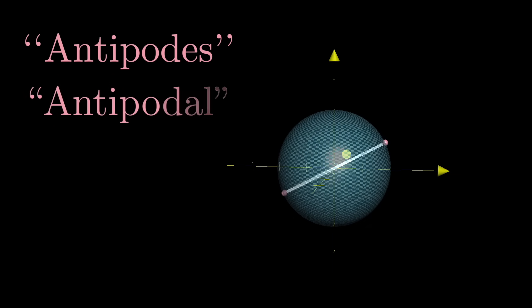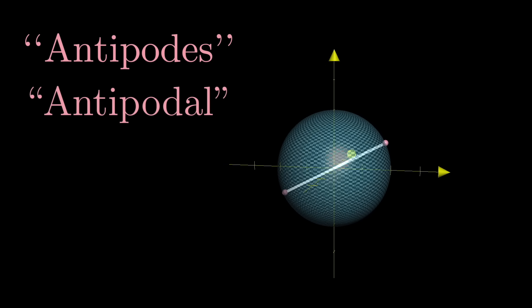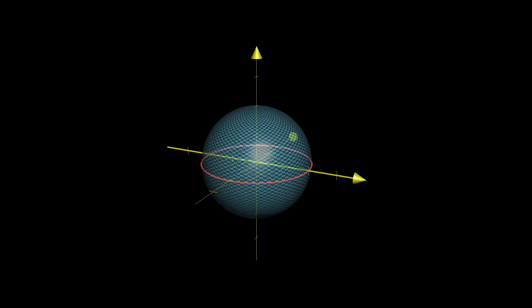Points on the exact opposite like this are called antipodes, or antipodal points. For example, if you think of the sphere as Earth,